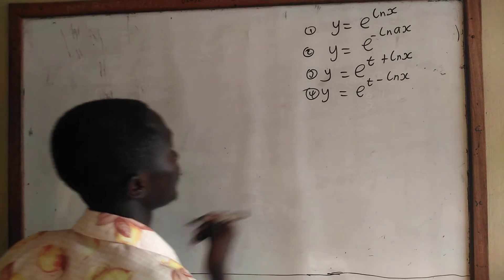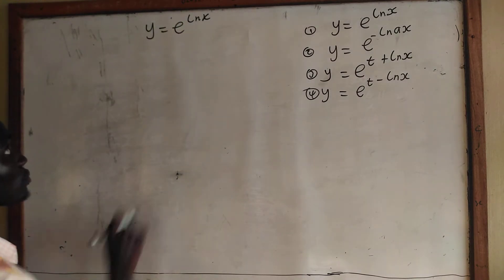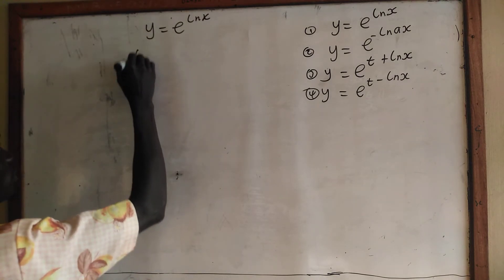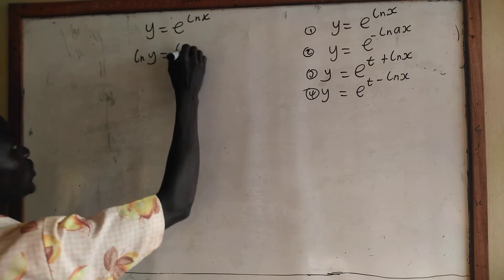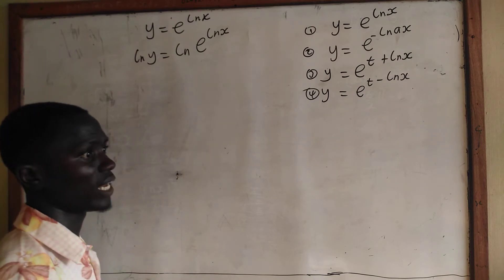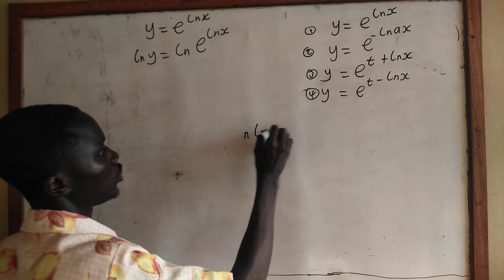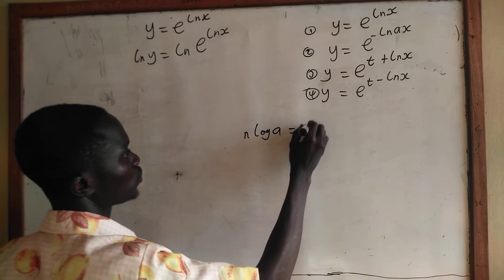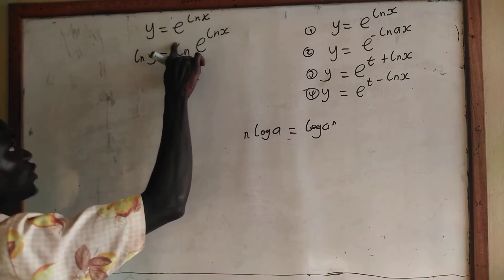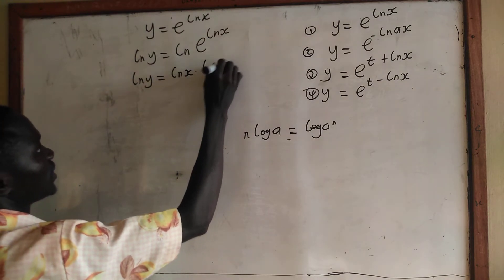Now let us take the first one. We have y equal to e to the power ln x. How do we simplify this? To do this, we will take ln of both sides. So we have ln y equal to ln of e to the power ln x. From the basic laws of logarithm, if you have n log a, it is equal to log a to the power n. So here, this is the power, and I am bringing the power down, giving ln y equal to ln x times ln e.